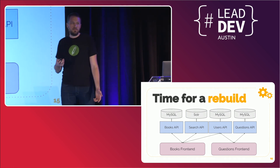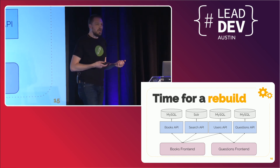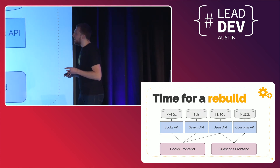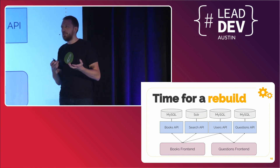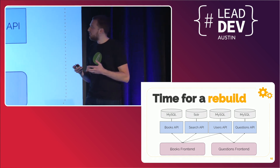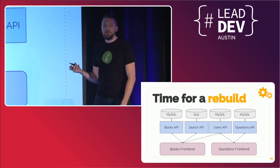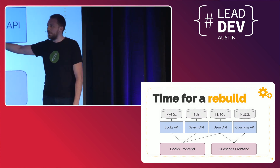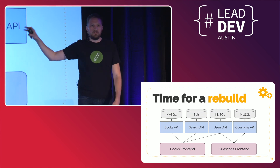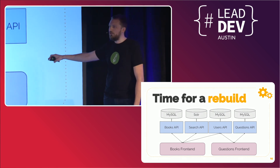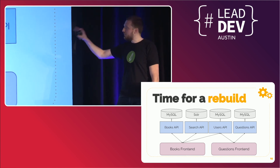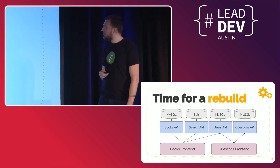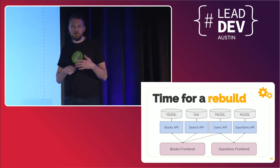We started looking at what it would take to rebuild this into our own custom software. AnswerBase wasn't built to do everything we wanted, reports were limited, and we weren't handling data in the best way. What was really helpful was that we'd already built microservices around our books product, so we could reuse functionality like login, checkouts, and payments for the questions platform. We just added a questions-and-answer API and had this done in about nine or ten months.